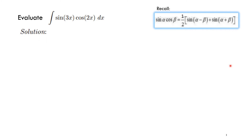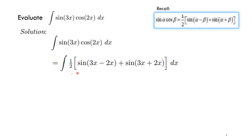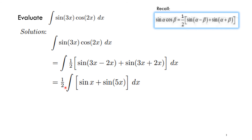So the integral of sin(3x)cos(2x) dx equals ½ times the integral of sin(3x − 2x) + sin(3x + 2x) dx. Since 3x − 2x = x and 3x + 2x = 5x, this becomes ½ times the integral of sin(x) + sin(5x) dx.